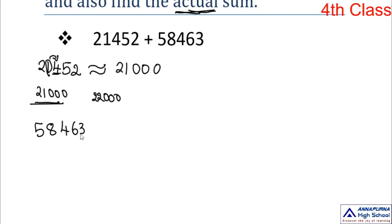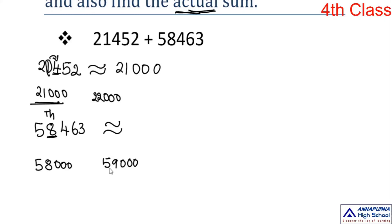Second number: 58,463. Which digit is in thousands place? 8 is in thousands place. The nearest thousands are either 58,000 or 59,000, and 58,463 lies between these two. The right-next digit to 8 is 4, which belongs to the small number family. So 58,000 is the nearest thousand for 58,463.